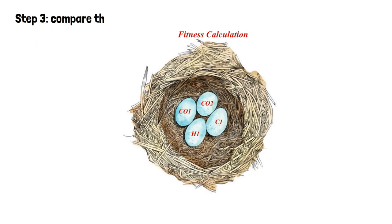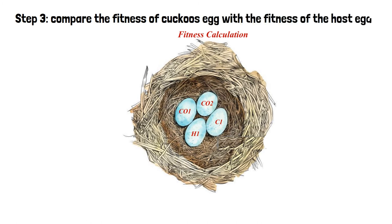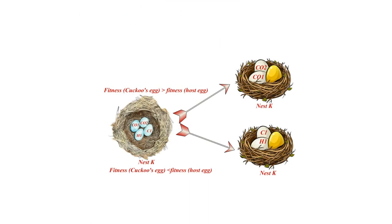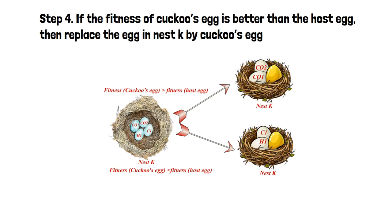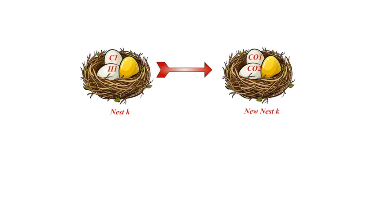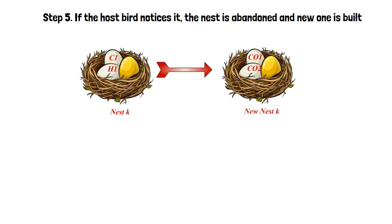In step 3, compare the fitness of the cuckoo's egg with the fitness of the host egg. In step 4, if the fitness of the cuckoo's egg is better than the host egg, then replace the egg in nest K with the cuckoo's egg. In step 5, if the host bird notices it, the nest is abandoned and a new one is built.